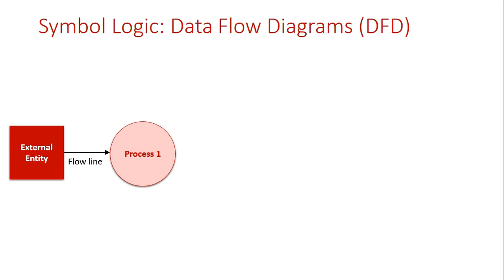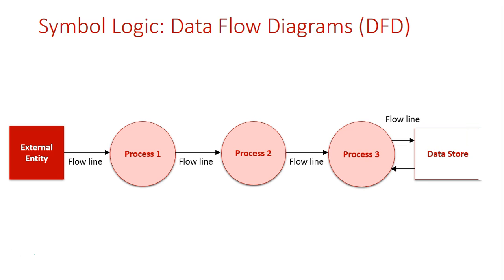We're trying to illustrate here that there's more than one process in the case of a Data Flow Diagram. Process 1 will then transform the data and send it to process 2. Process 2 will transform the data and send it to process 3. Process 3 then may actually enter the data into a data store such as a database, or it may retrieve data from a data store.